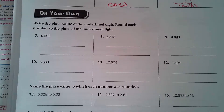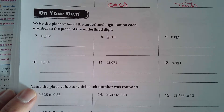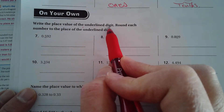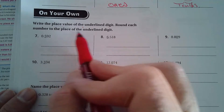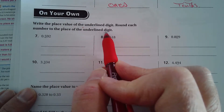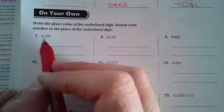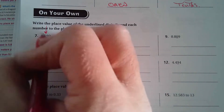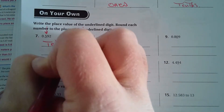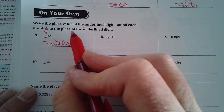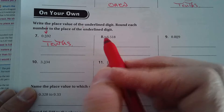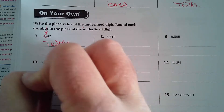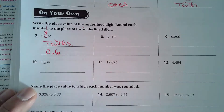Let's look at number seven — put up ten points. Mr. Woldridge, picking on you here. It says write the place value of the underlined digit — we did that above — then round each number to the place value of the underlined digit. What's the place value of the underlined digit? And then what would it round to? Point six — or zero point six is fine too.